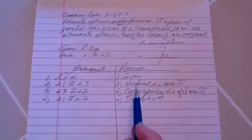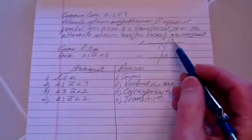We know that angle 1 is congruent to angle 3 because they are vertical angles. And remember that vertical angles are congruent.